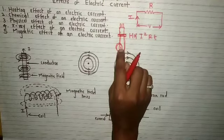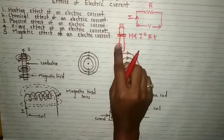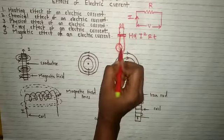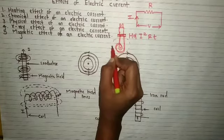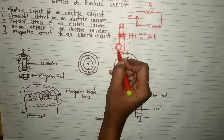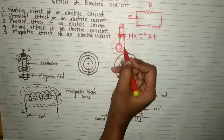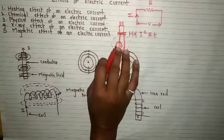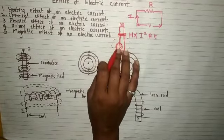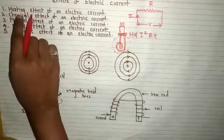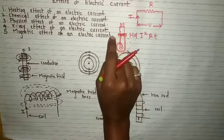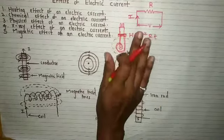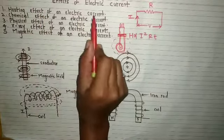When the current flows through this rod — which is a conductor — this material is heated up. Due to this heating, our water gets heated. This is the use of a heater, or the heating effect of electric current in our daily appliances. There are many appliances we use regularly that use this effect: electric heater, electric geyser, electric stove, electric iron. The press also works on the heating effect of an electric current.